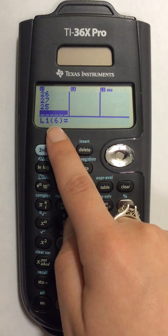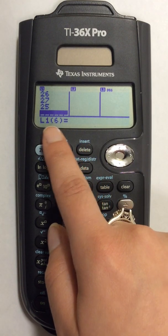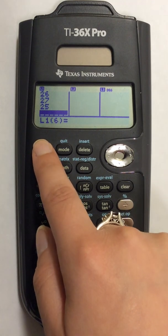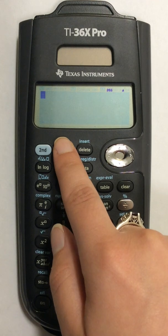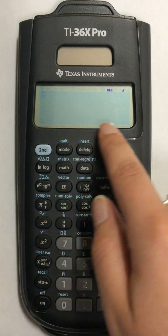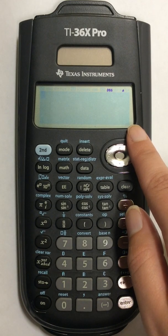I already have a list of numbers entered into my calculator so to begin I'm going to press the second button and then press quit. This will clear and save all of your lists of data into your calculator.